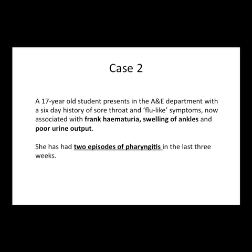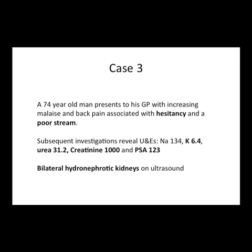Case 2 — the 17-year-old with streptococcal throat infection who develops hematuria, ankle swelling, and poor urine output. This is nephritic syndrome — frank hematuria, coca-cola colored urine — with some proteinuria causing ankle swelling. She's had a sore throat. The most common cause of nephritic syndrome in young adults and children is post-streptococcal glomerulonephritis. This is a classic case.